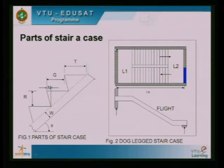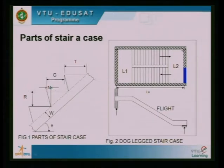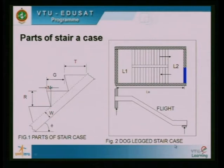The all-round wall is something like 200 mm, 230 mm, 250 mm, or even 300 mm depending on the type of the structure. We will be constructing this wall, and on the wall the flight is supported, and also at the ends of the landing. In this particular case, the span is from the center of this wall to the center of the other wall.